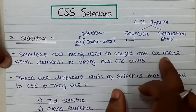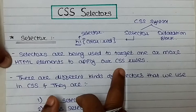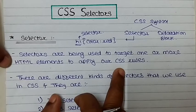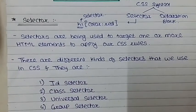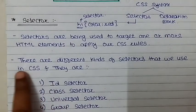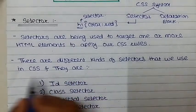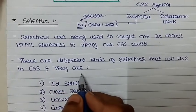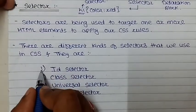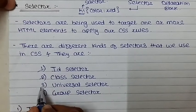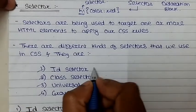So selectors are used to target one or more HTML elements to apply our cascading style sheet rules. There are different kinds of selectors used in CSS. The first type is the ID selector, then class selector, universal selector, and group selectors.